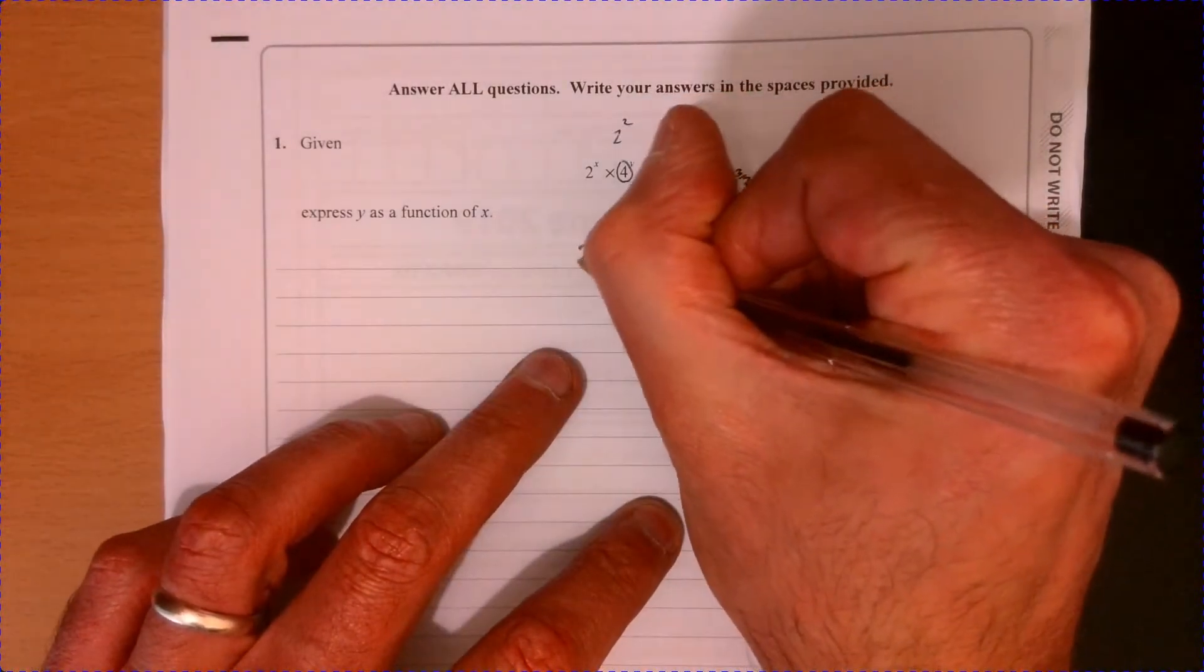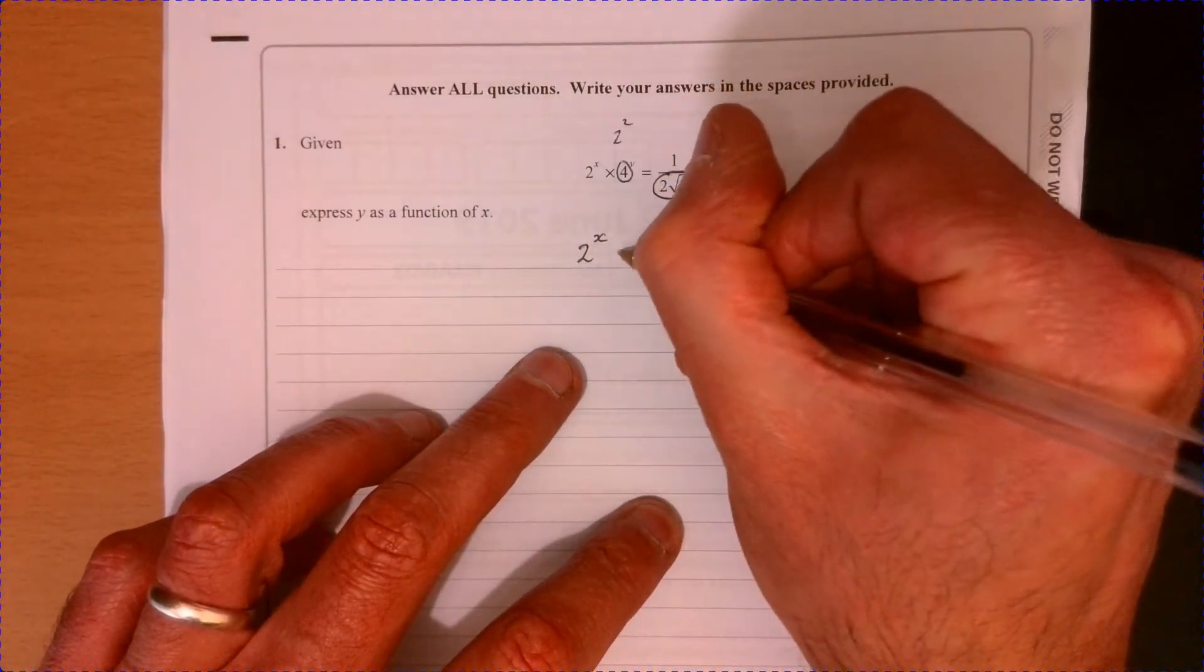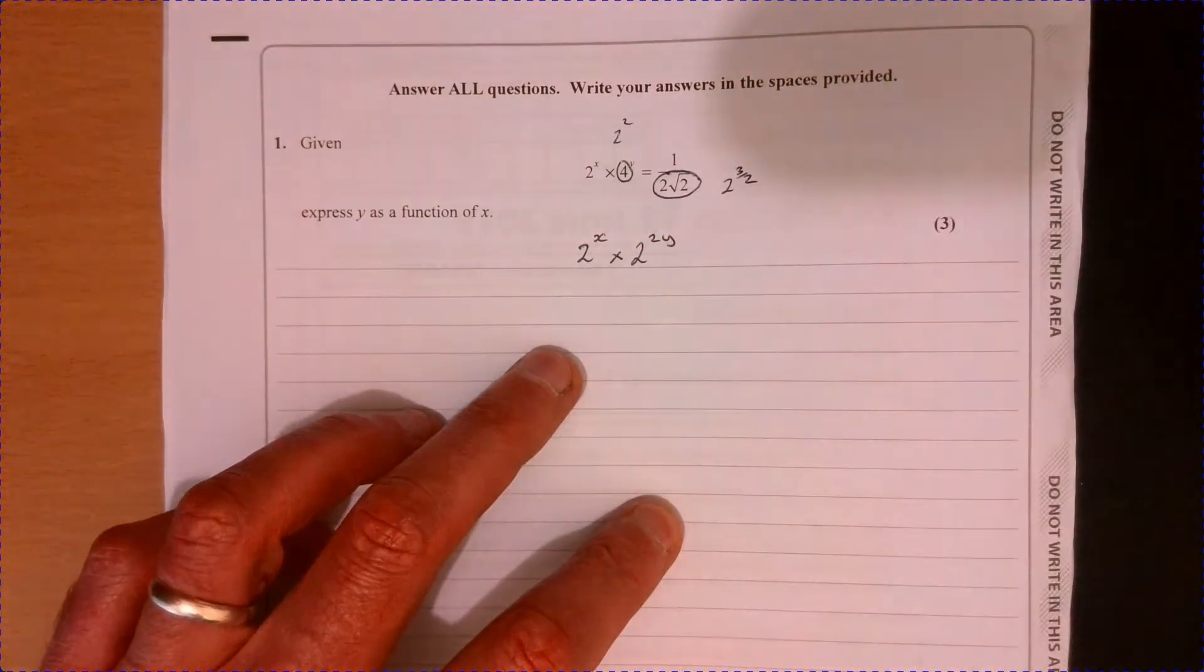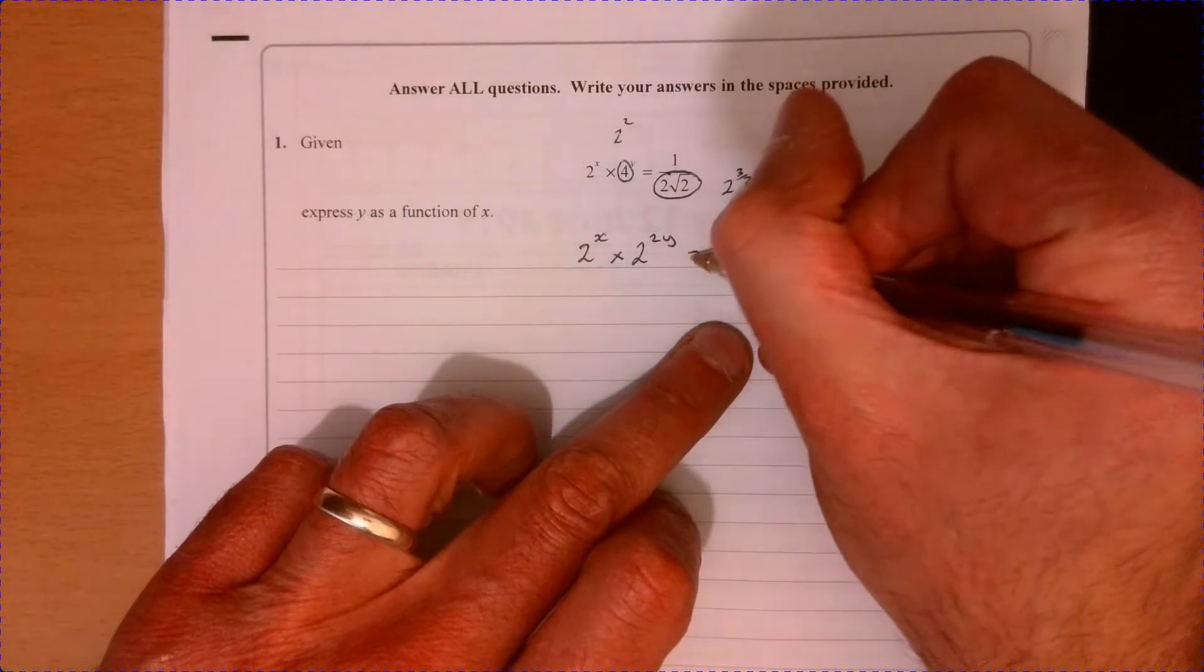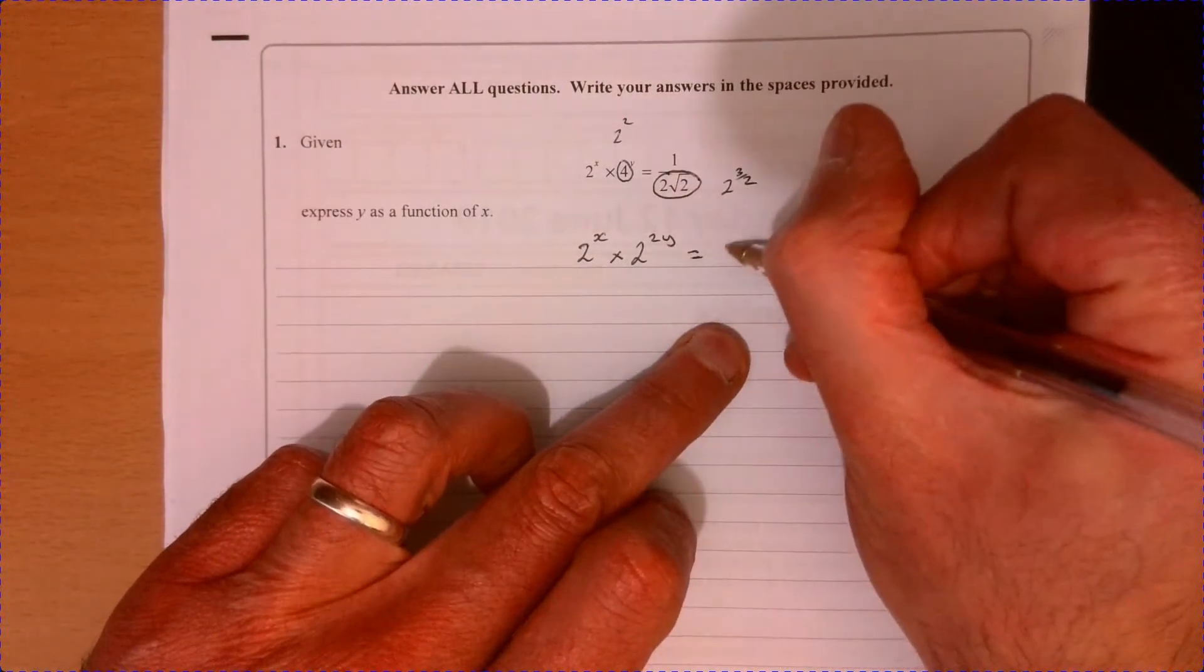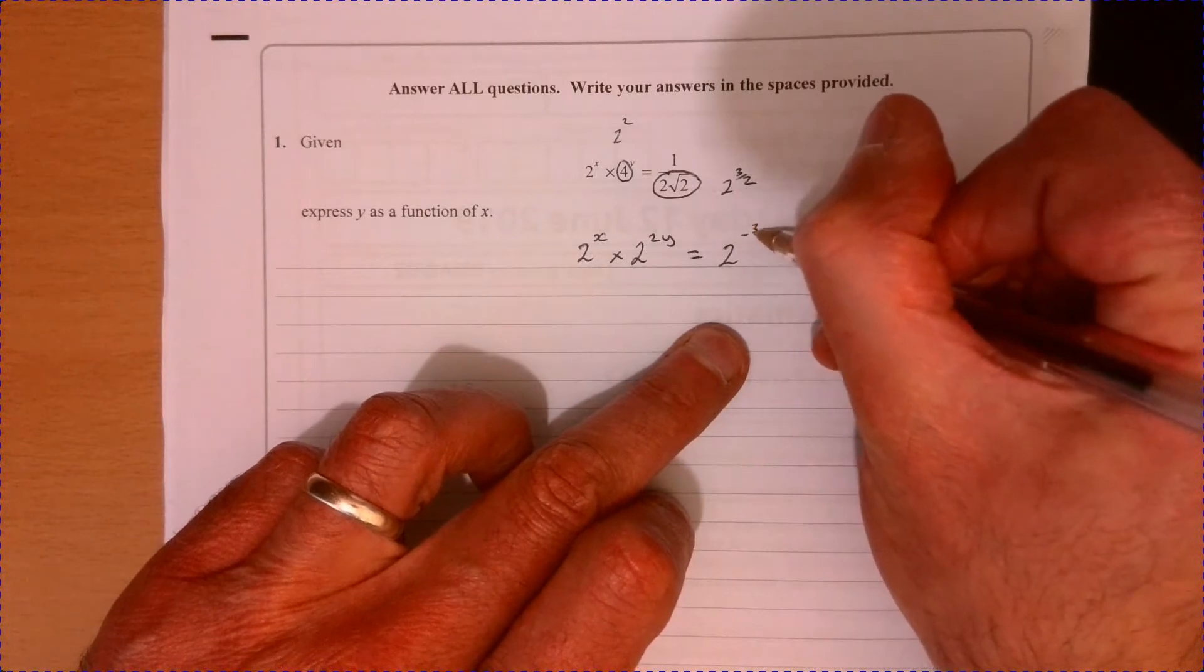So we've got two to the x times two squared. And don't forget, there's a y there as well. And then that equals, well, it's going to be minus because it's one over this. So two to the minus three over two.